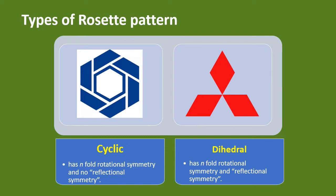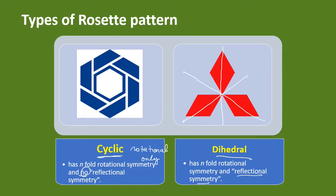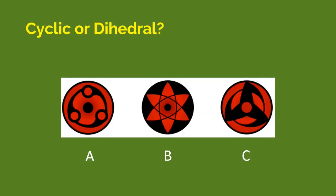Let's discuss different types of rosette patterns: cyclic and dihedral. Recall that for rosette patterns, reflection symmetry is not required. For patterns that have no reflectional symmetry — meaning rotational only — we call them cyclic patterns. But if they have reflectional symmetry, they are called dihedral patterns. For Mitsubishi, it has reflection symmetry along multiple lines, whereas another pattern may be cyclic because you cannot reflect it along any line.